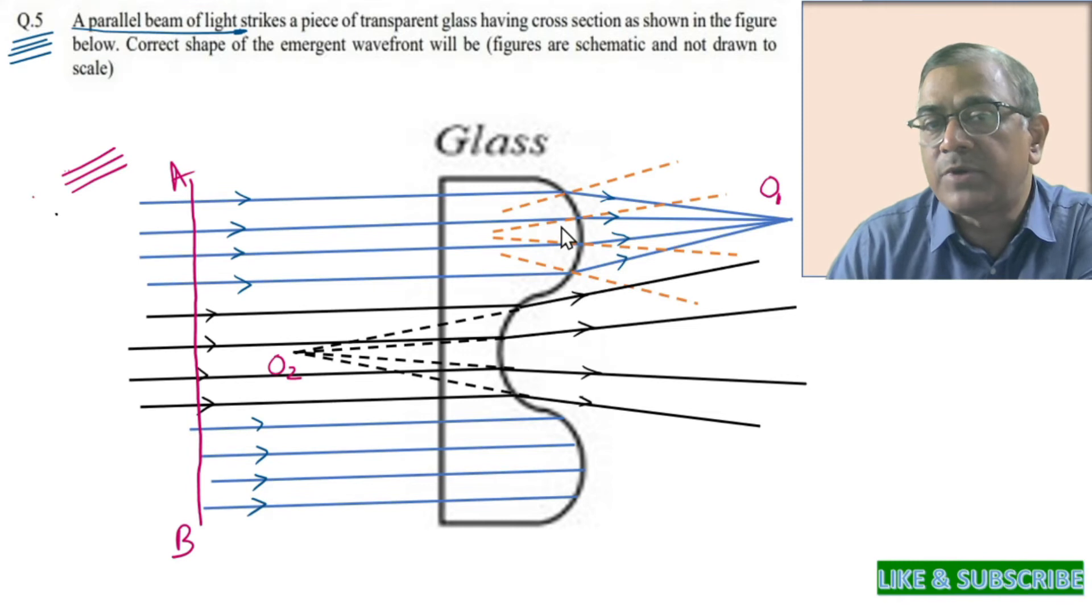As the emergent light is traveling from denser medium to the rarer medium, it has to deviate away from the normal. This is what has been shown over here.